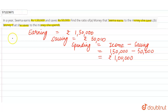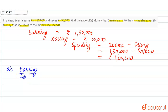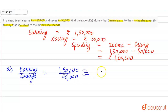For part A, we calculate the ratio of earnings to savings. Earnings are one lakh fifty thousand and savings are fifty thousand. The common factor is fifty thousand, so the ratio will be three ratio one.